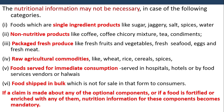Nutritional information may not be necessary in the case of the following categories: foods which are single ingredient products like sugar, jaggery, salt, spices, or water; non-nutritive products like coffee, coffee-chicory mixture, tea, and condiments; packaged fresh produce; raw agricultural commodities; food served for immediate consumption; and food shipped in bulk.